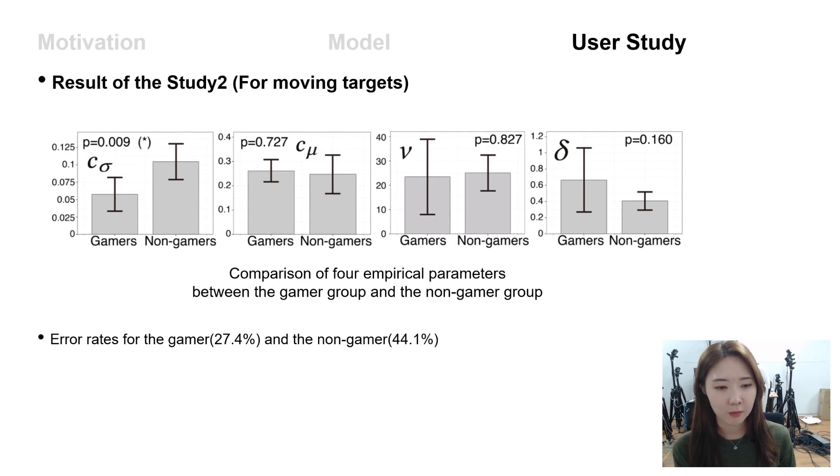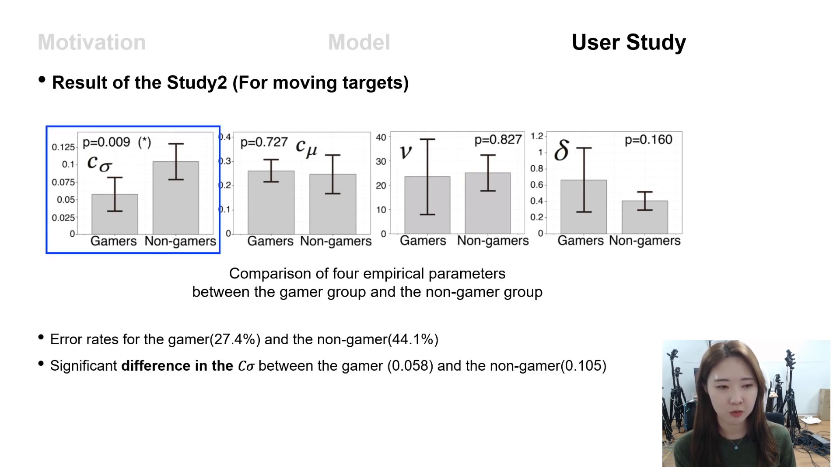The error rate of the gamer group was below that of the non-gamer group. Especially among the parameters, the C-sigma showed a significant difference. That means the gamer's internal clock is more precise to estimate the timing.